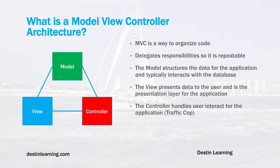The view presents the data to the user and is really the presentation layer for the application. The view will pull data from the model and display it to the user, so all presentation layer components are isolated within the view. This means you can have multiple views using the same model and render it for different things — for example, rendering data for a PDF instead of HTML, or for different types of devices. The controller handles user interaction and acts like the traffic cop for the application — handling routing, menus, and transforming data before it goes into the view.